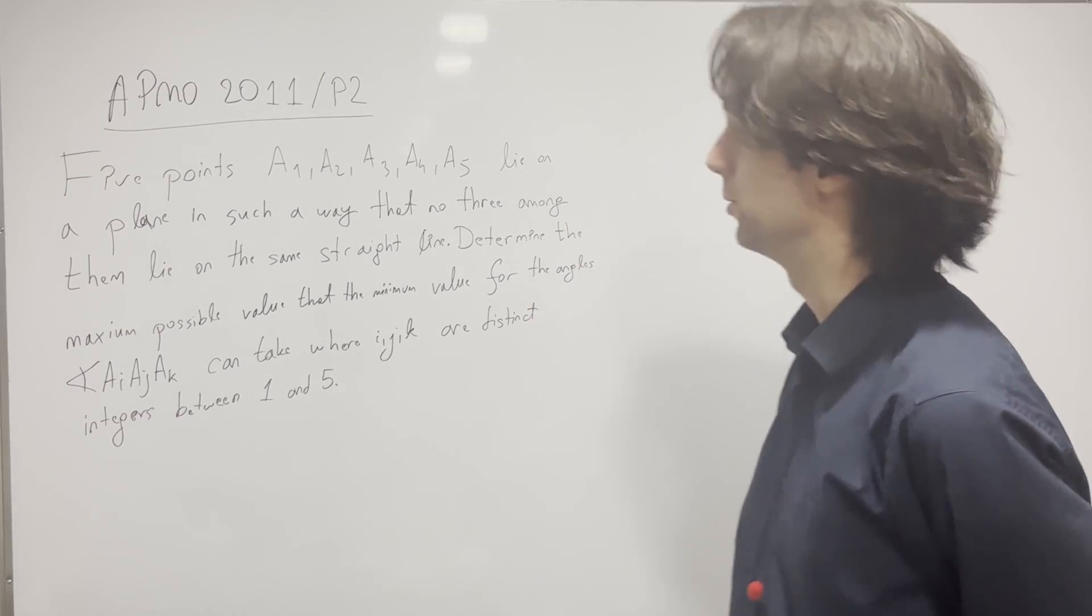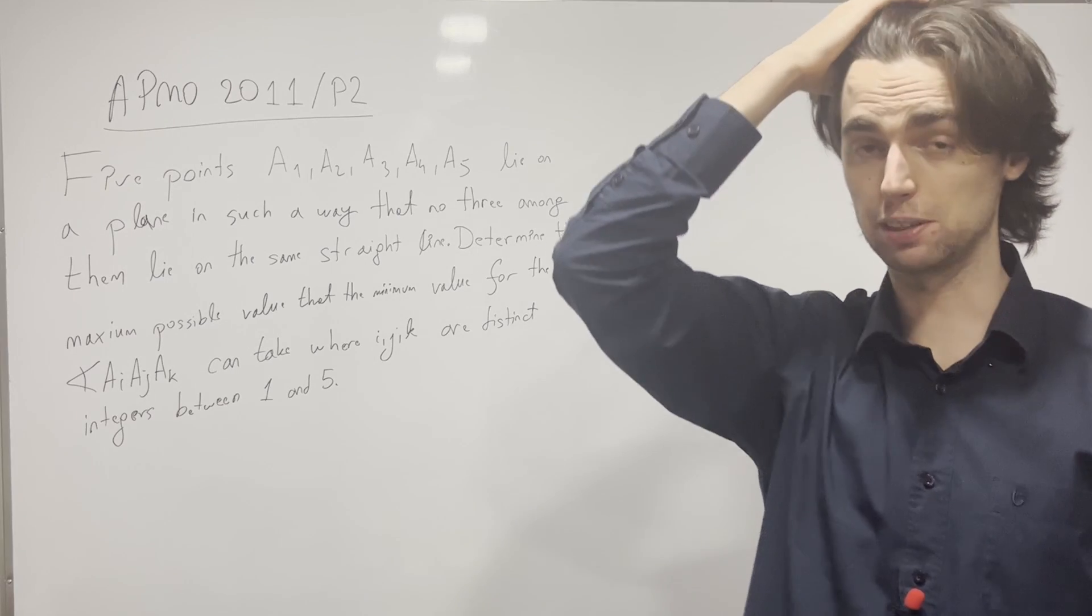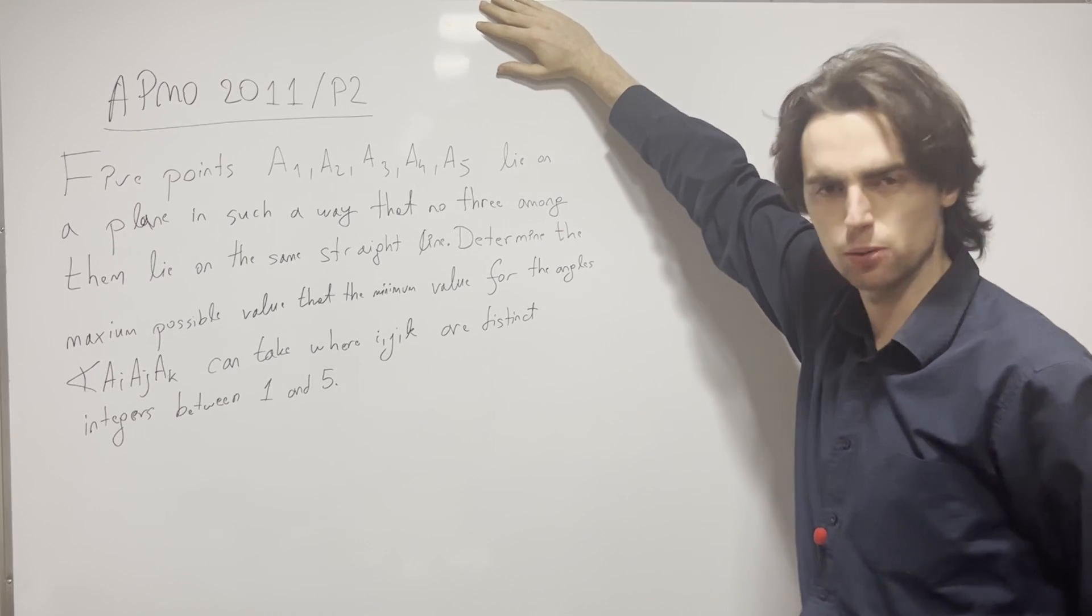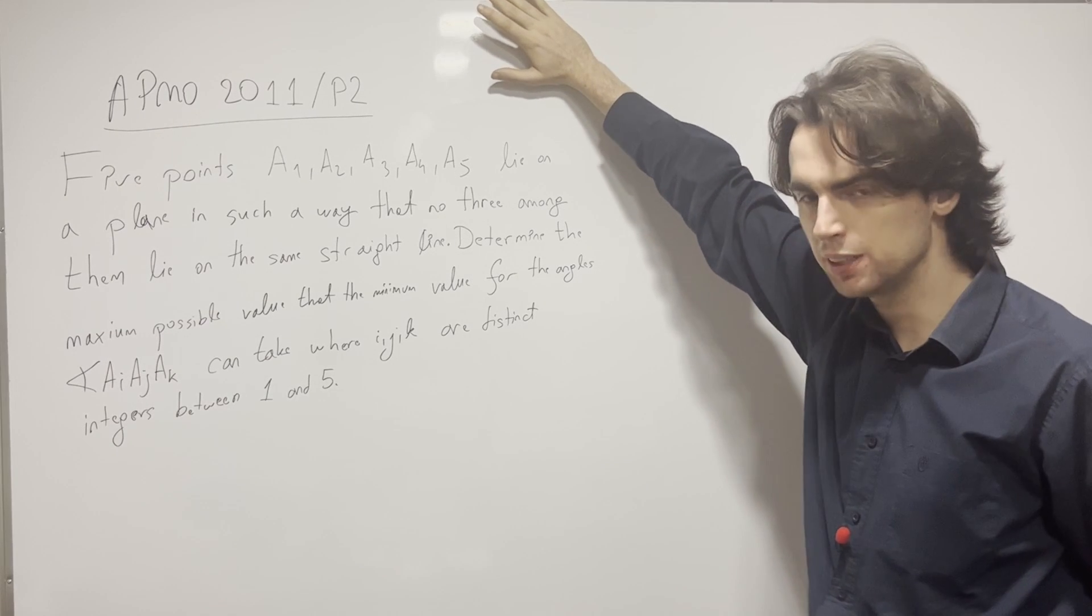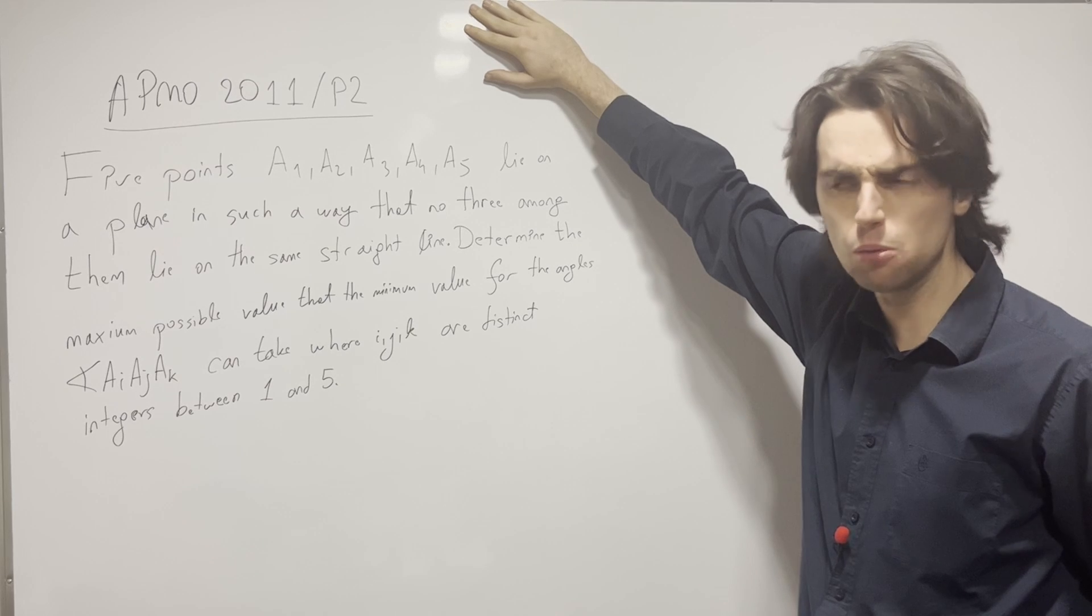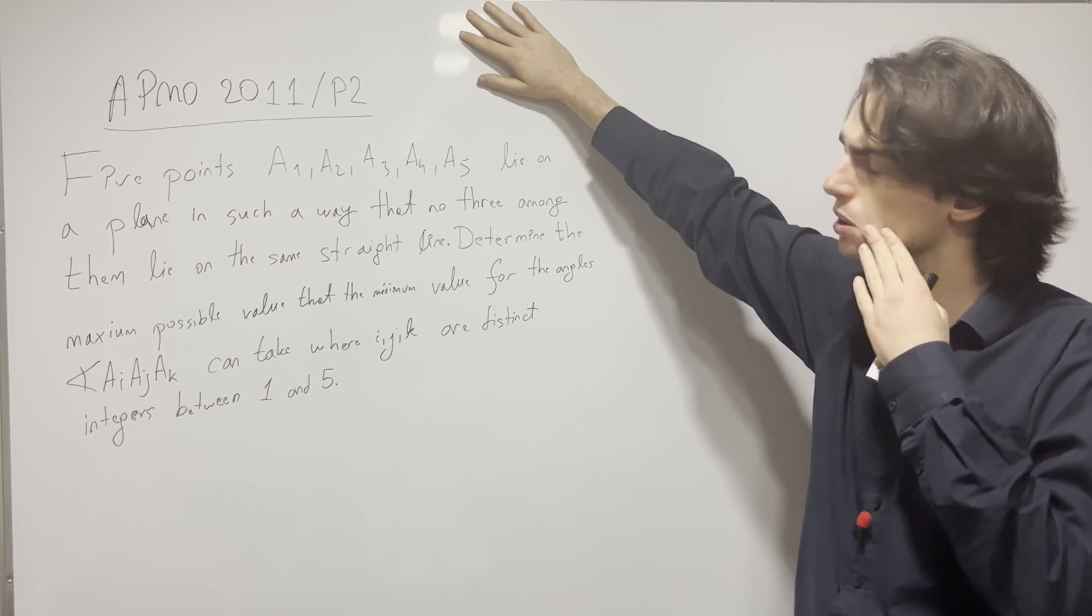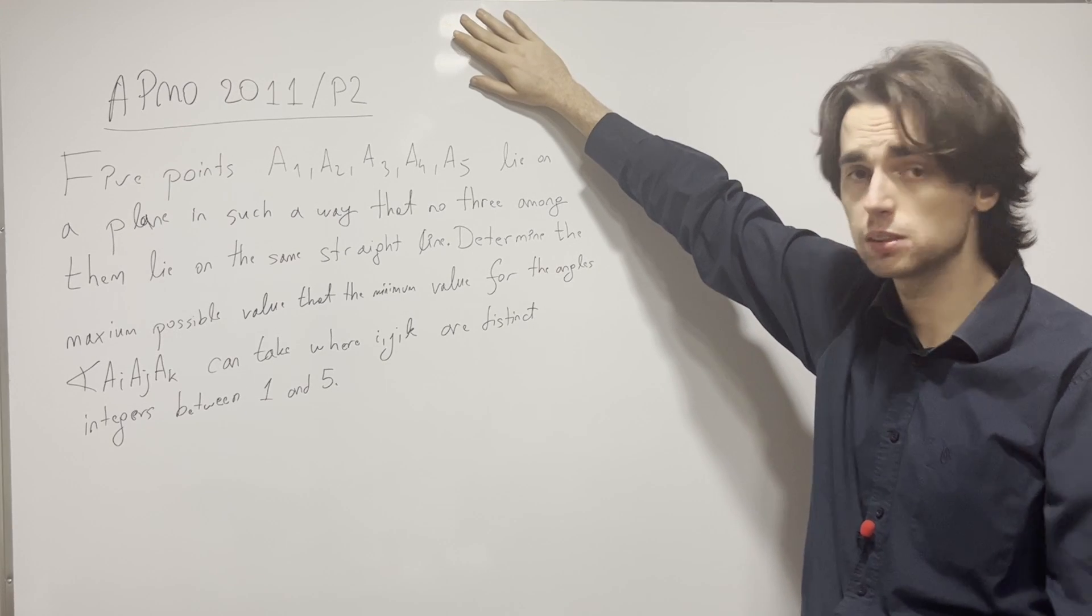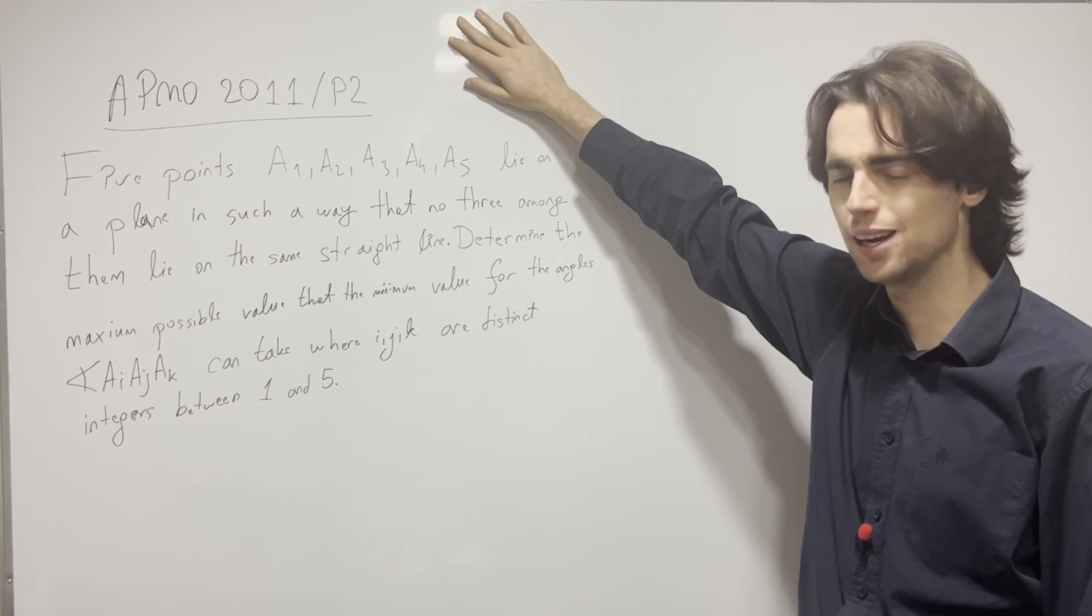Hello fellow problem solvers. Today we're going to be doing a problem from the 2011 Asian Pacific Math Olympiad, problem number 2. I suggest we try this problem out for a minimum of 15 minutes, ideally 30 to 45, not more than an hour and a half. Maybe if you need to write it down, maybe think about 2 hours at most, but really around 30 minutes. If you'd like to go along with us, give this a go for the next 5 to 10 minutes. And now let's begin.